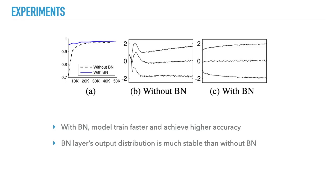Let's look at some experiments of BN. In figure a, I test the accuracy of a network trained with and without batch normalization over a number of training steps. Batch normalization helps the network train faster and achieve higher accuracy. In figures b and c, it shows the evolution of input distribution to a typical sigmoid, shown at the 15th, 50th, and 85th percentiles. Batch normalization makes the distribution more stable and reduces the internal covariate shift.